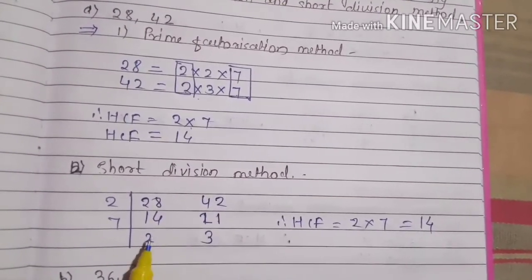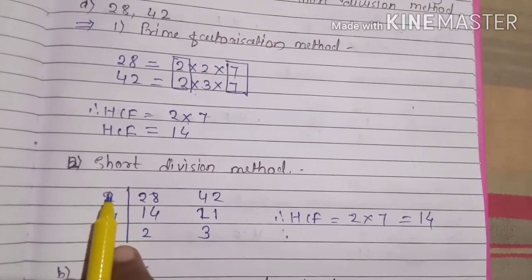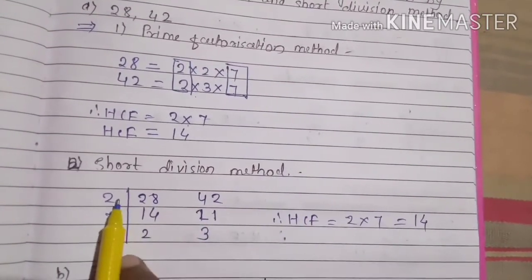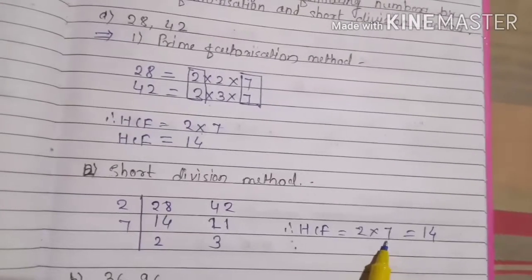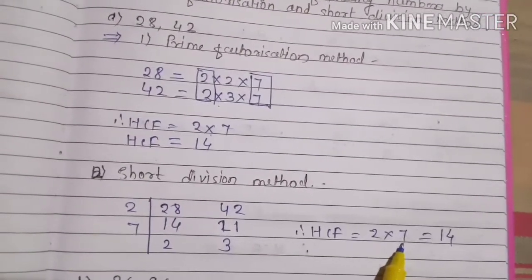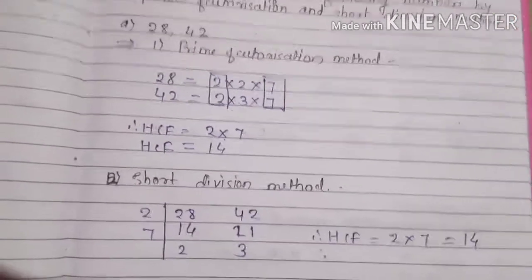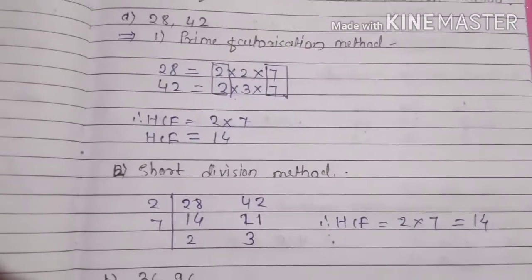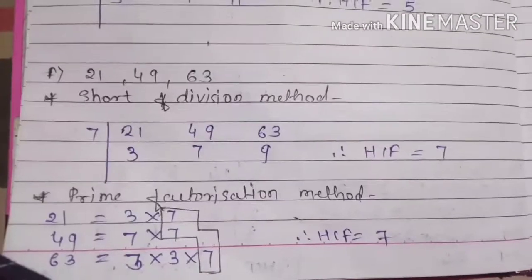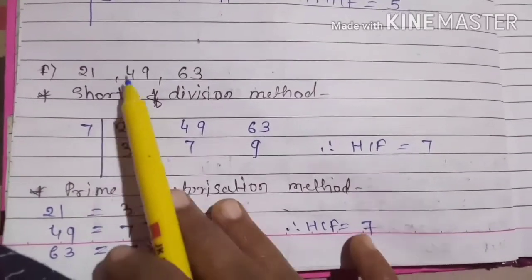The HCF is the product of all the divisors on the left side, so 2 × 7 = 14. The HCF is 14. Now let's take one more example.